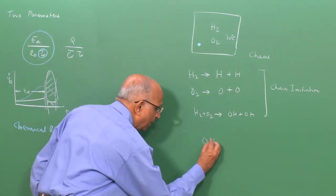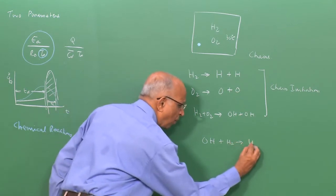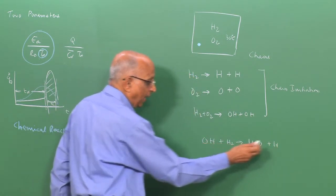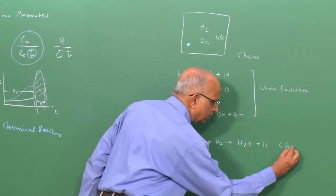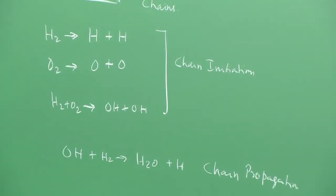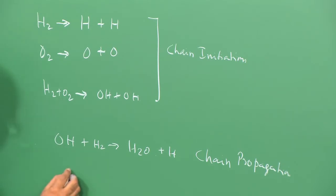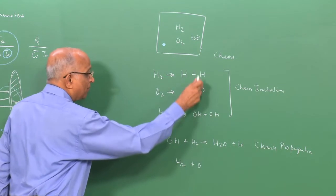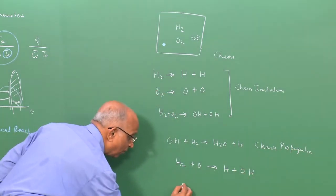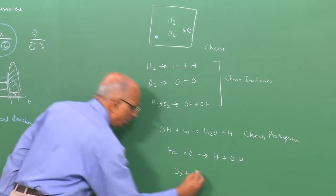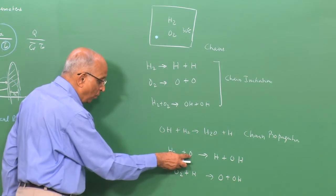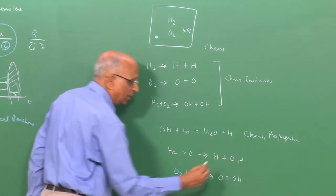OH can react with H₂ to form H₂O and one H atom — so for every OH chain, another H chain is formed; we call this chain propagation. It is also possible that O reacts with H₂ to form H and OH, and O₂ reacts with the hydrogen chain to form OH and O. In this case, one chain forms two chains, so we call it chain branching.